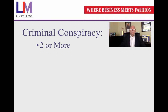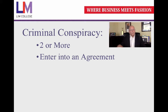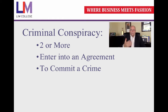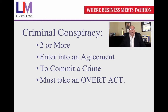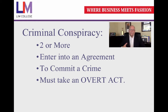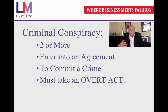Criminal conspiracy means two or more people enter into an agreement to commit a crime. You can't conspire with yourself, so it has to be two or more. The agreement doesn't have to be written, but importantly, they must take an overt act in furtherance of that crime — they can't just talk about it. Examples include buying a gun, buying a map, or casing a bank.